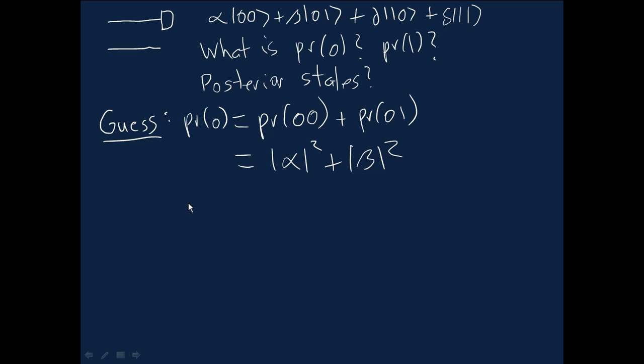In a similar way, you would guess, and we will adopt the rule, that the probability of getting 1 is equal to what happens when we sum over all the possible probabilities for a two-qubit measurement where we get a 1 result on the first qubit. This is equal to gamma squared plus the amplitude delta squared.